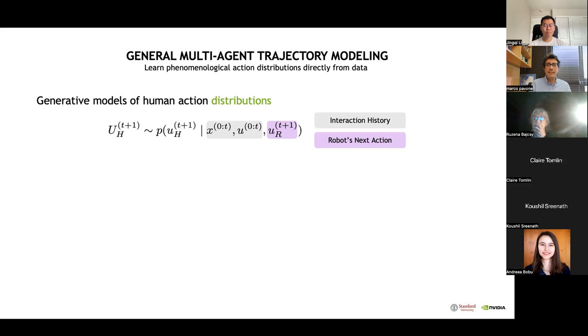The interaction history represents, for example, the history of relative poses between the autonomous vehicle and other agents. Conditioning on the history lets you infer things about the human, such as attentiveness or aggressiveness. While conditioning on the autonomous car's future lets us capture the interactive aspect, allowing us to answer questions of the type: if a robot were to enact a certain acceleration profile, what will be the distribution of possible human responses?